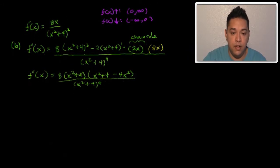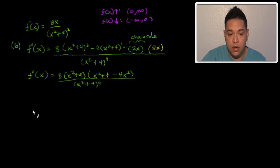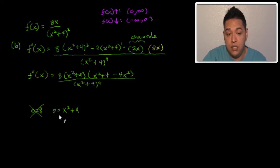We set the numerator equal to zero and try to factor it by setting all products equal to zero. We don't need to set 8 equal to zero. From the previous solution, whenever we have (x² + 4) set equal to zero, we get an imaginary number, so we don't have any critical points there. We can skip those factors.